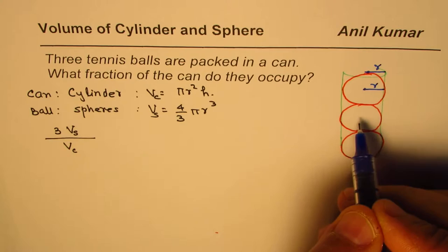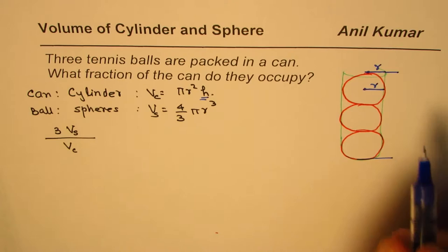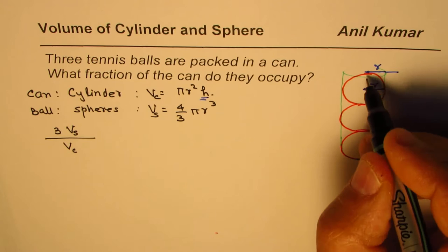They have the same radius. Now for the cylinder we have height h. How can I relate height with radius? That is an important thing to consider.